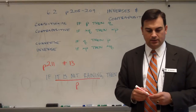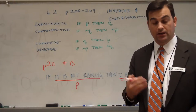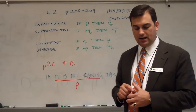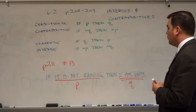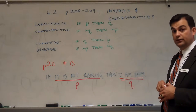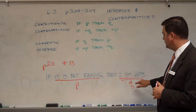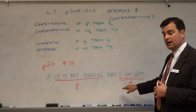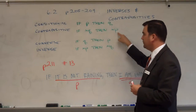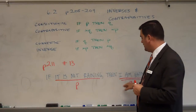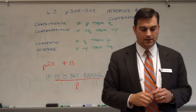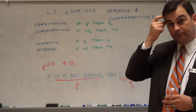Now let's take a look at different additional statements and determine: can we draw some conclusion from these two statements together? In letter A, it says: I am not happy. Well, our original conditional is if it is not raining, then I am happy. 'I am not happy' is not Q. If we have not Q, that's the contrapositive — if not Q, then not P. So I can see that if I am not happy, then it is raining. That would be the answer for 13a: my conclusion is, if I am not happy, then it is raining.